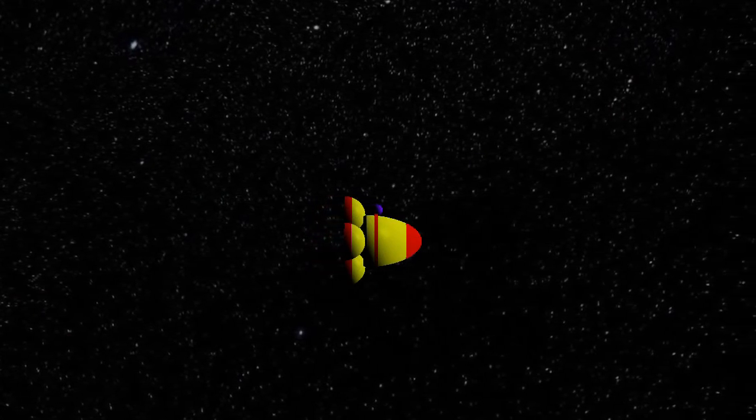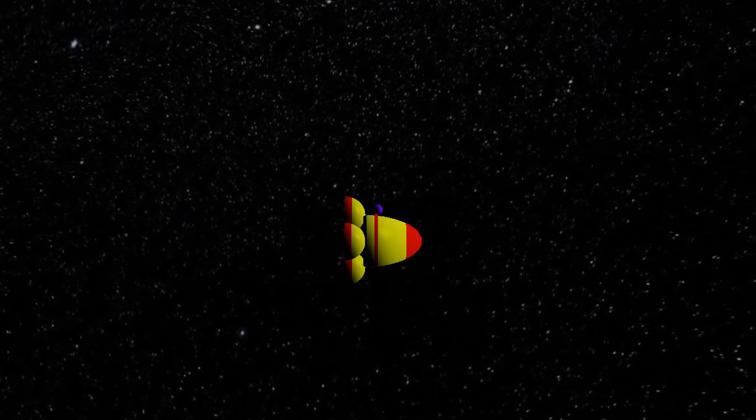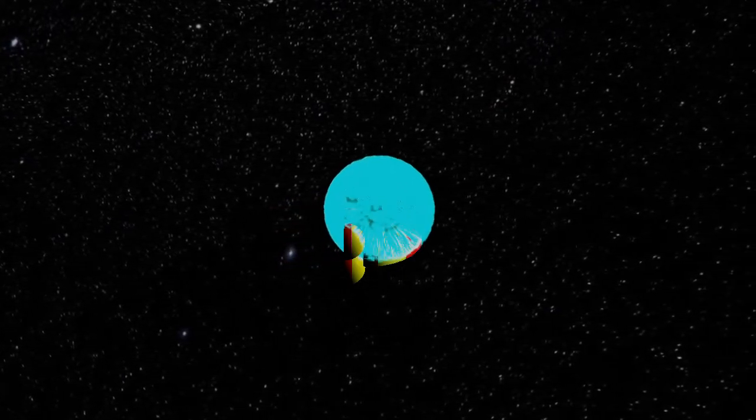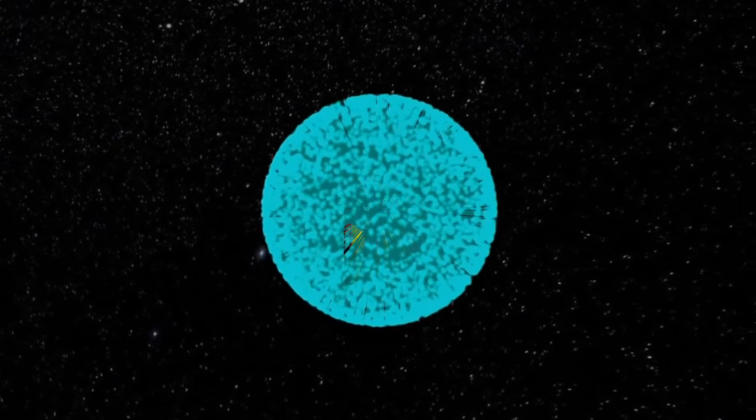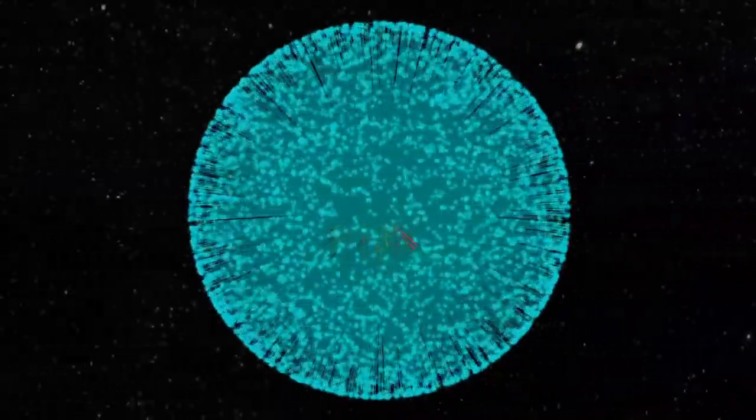Here we have the yellow spacecraft stationary once again. It will emit a spherical distribution of photons. We can orbit about the spacecraft to see the photons are reasonably evenly distributed.